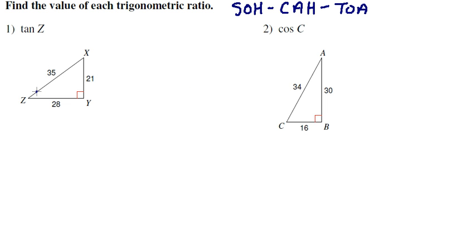So in example one, we are looking for angle Z. We have all of our information here. So let's label these. Across from our 90 degrees is our hypotenuse. Across from angle Z, which is what we're looking for, is opposite. And adjacent to angle Z is 28.